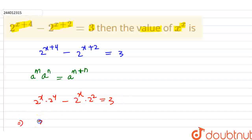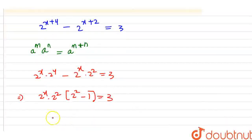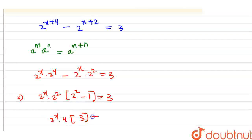Now we write 2 to the power x into 2 to the power 2, so here we get the value of 2 squared minus 1, which equals 3. So 2 to the power x into 4, and 4 minus 1 equals 3. So 3 equals 3 — cancel. That implies 2 to the power x is equal to 1 by 4.